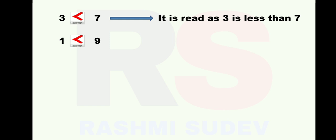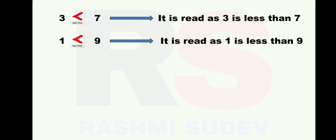Less than sign. How are you going to read this? It is read as: 1 is less than 9. You can practice reading from the name written below the sign. Once you are ready with identification, it will be easier to understand. Next: 2 and 20. 2 is the smaller number, 20 is the bigger number, so less than sign is used. It is read as: 2 is less than 20.